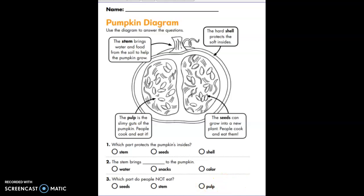After you answer all three questions, color in the pumpkin diagram, realistic colors, then put in the finished work bin.